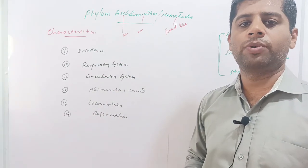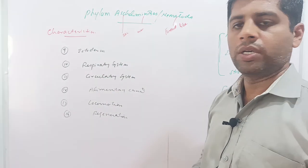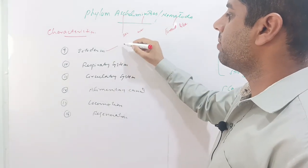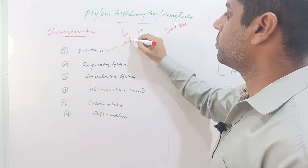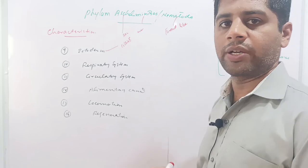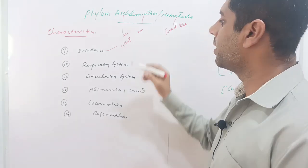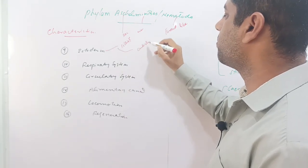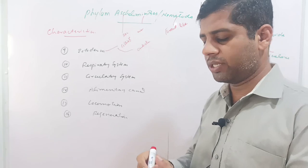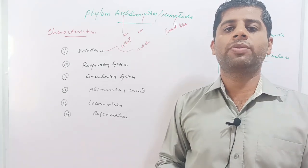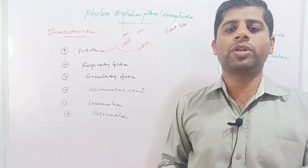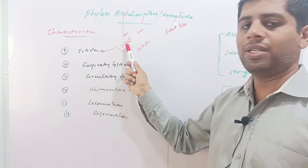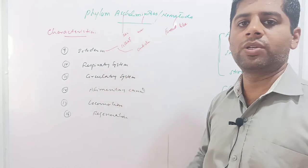The ectoderm, or external layer of the body, in nematodes lacks cilia — there are no cilia present on the ectoderm. However, the ectoderm is covered with a cuticle, which is a protective layer on the skin of these worms that protects them from the host immune attack or the host body's defense system.